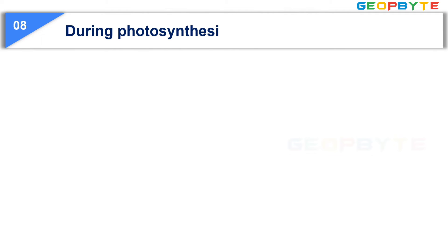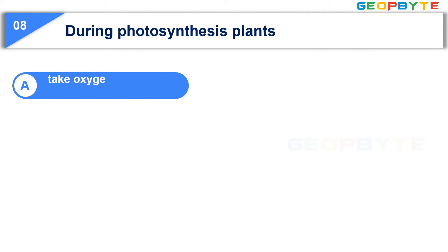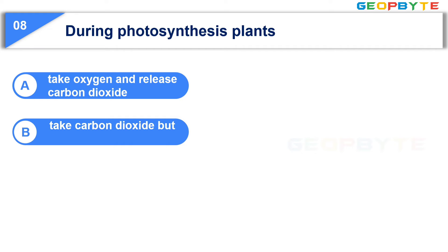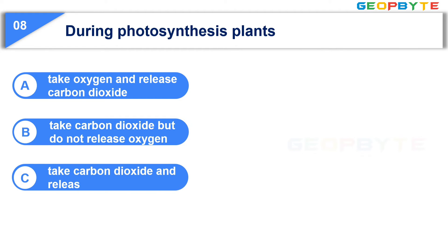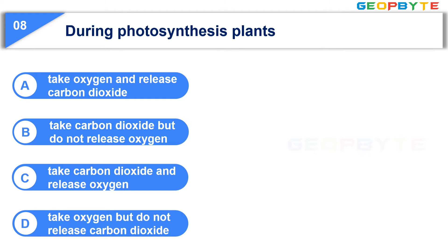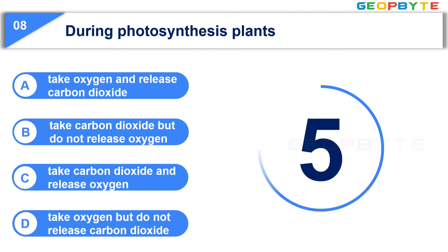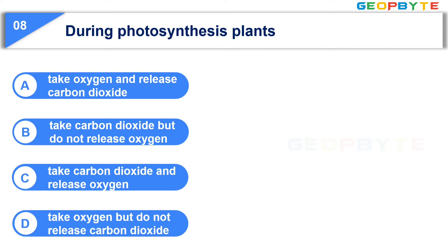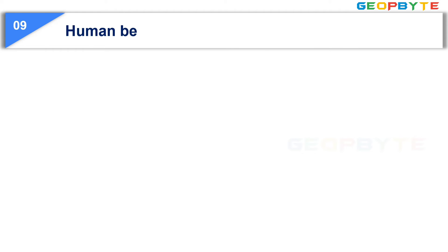Moving to the next question: During photosynthesis, plants — Option A: Take oxygen and release carbon dioxide. Option B: Take carbon dioxide but do not release oxygen. Option C: Take carbon dioxide and release oxygen. Option D: Take oxygen but do not release carbon dioxide. Your time starts now. Your time is up and the correct answer is Option C: Take carbon dioxide and release oxygen.